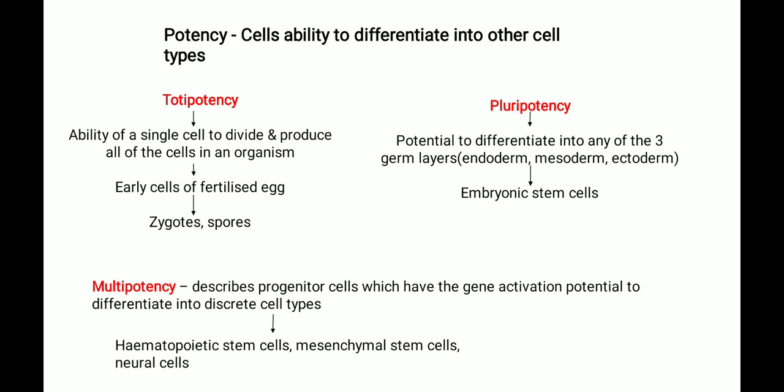Pluripotent cells include the inner cell mass of the blastocyst and embryonic stem cells. This is an important exam topic — in a previous DBT exam, the question asked about pluripotent stem cells, and the answer was embryonic stem cells. There are four types of potency that are important to know with their examples.